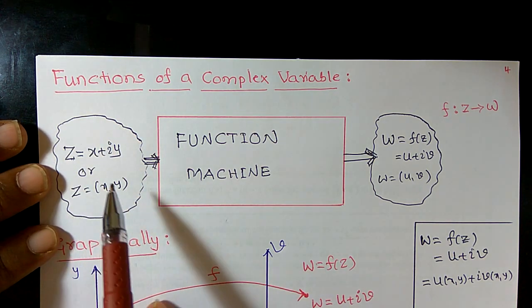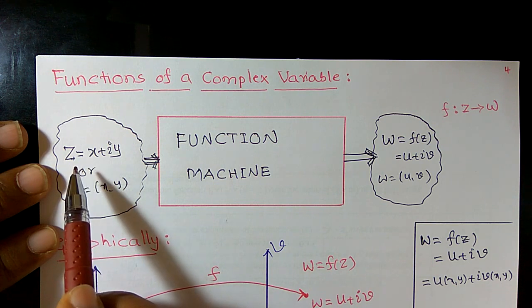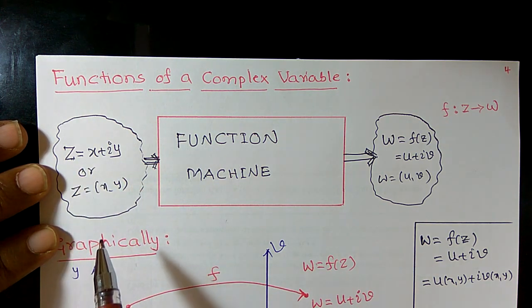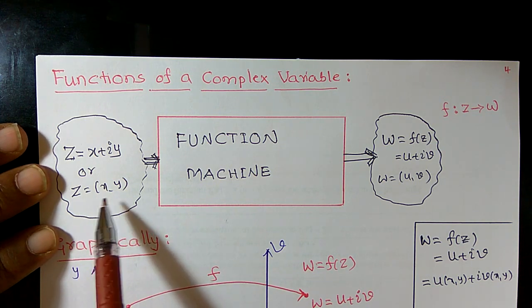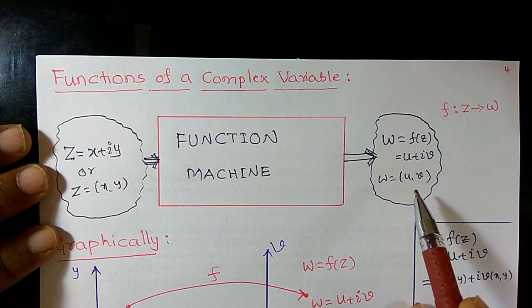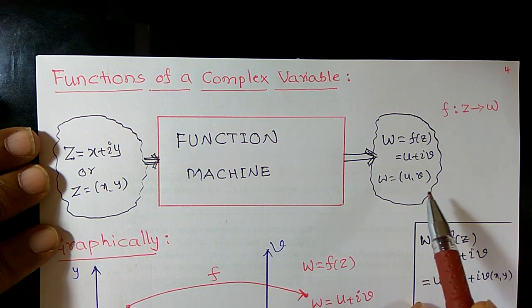Because geometrically a complex number can be represented as a point. In that sense, I can say ordered pair (x,y) and I can obtain ordered pair (u,v).